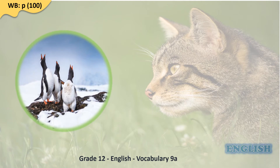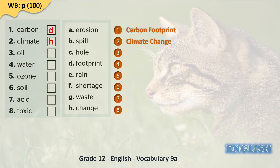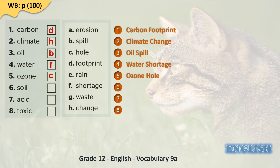Now let's move to our workbook page number 100, where we are expected to match the words to form eight collocations about environmental issues. Number one: carbon footprint. Number two: climate change. Number three: oil spill. Number four: water shortage. Number five: ozone hole. Number six: soil erosion. Number seven: acid rain. Number eight: toxic waste.